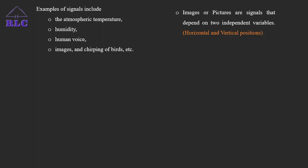Images or pictures are signals that depend on two independent variables. That is, say there is signal s(x, y) which is equal to 3x² plus 2xy plus y². The signal s is a function of two independent variables x and y. For an image or a picture signal, x and y are spatial coordinates in a plane — that is horizontal and vertical position. So images or pictures are examples of two-dimensional signals.